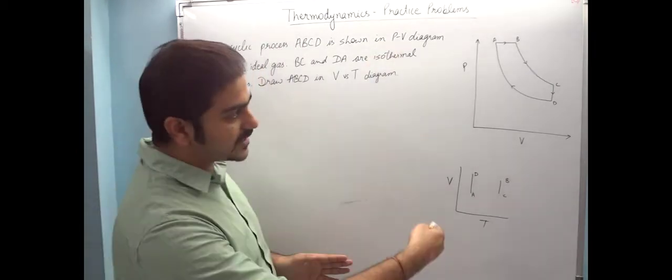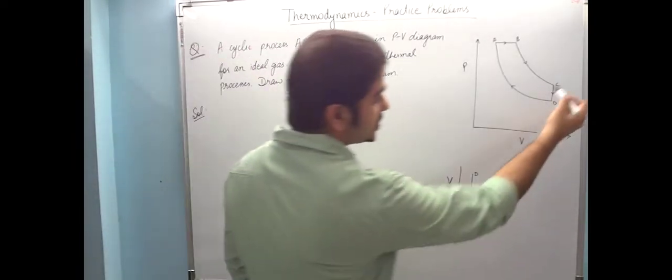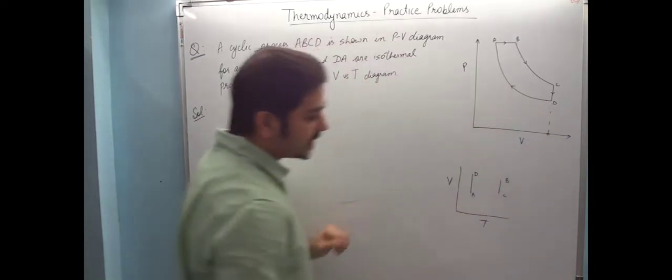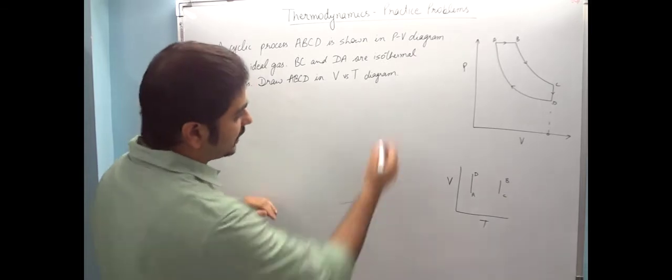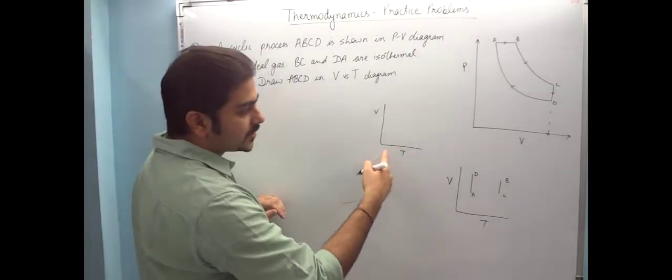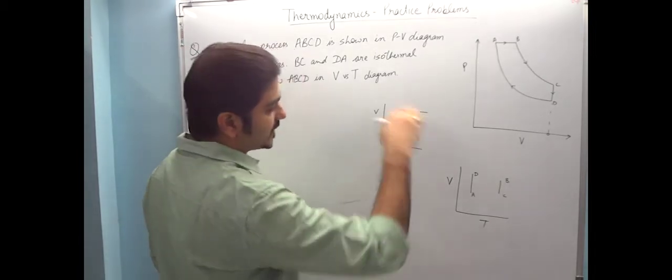Then BC will be a straight line, DA will be a straight line. Then CD - volume constant is constant. So if CD volume constant is constant, that means it should be something like this, since V versus T you have made. So if from D you have moved to C, volume constant is remaining, so this is straight line.